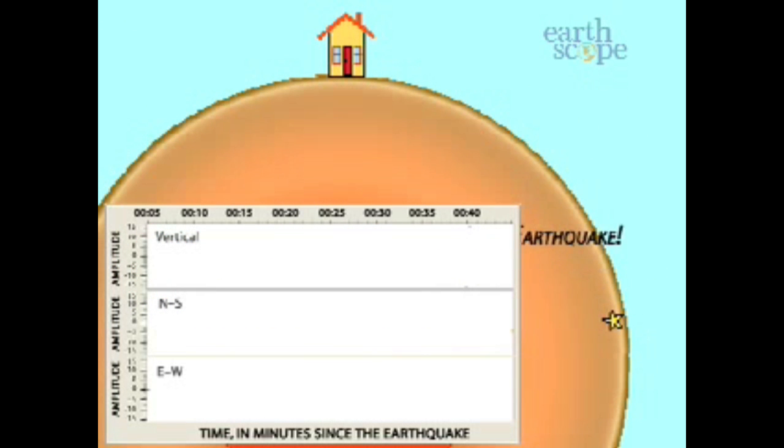Earthquakes send seismic waves in all directions. Body waves, such as P and S waves, travel a curving path through the Earth. As a result, they arrive at seismic stations from below.